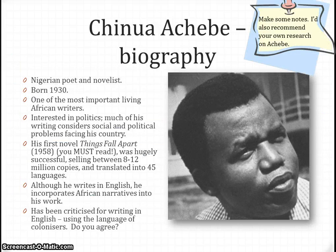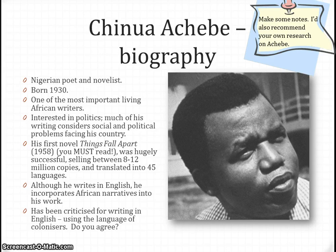Some brief biographical notes on Achebe. He was a Nigerian poet and novelist, born in 1930, and one of the most important living writers from Africa today. Very much concerned with politics, much of his writing considers social and political problems facing his country, Nigeria. I would absolutely recommend that you read his novel 'Things Fall Apart' — it's very short, a hugely successful novel translated into many different languages, and very powerful. Achebe has been criticised for writing in English rather than his native language — think about that when you read the poem.